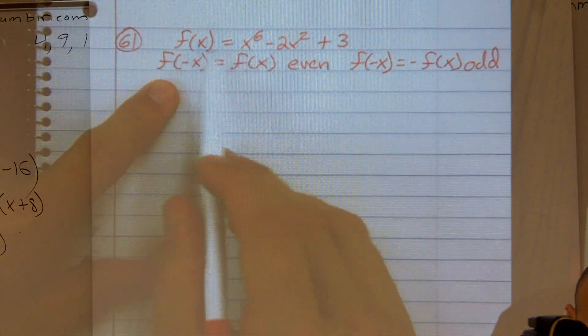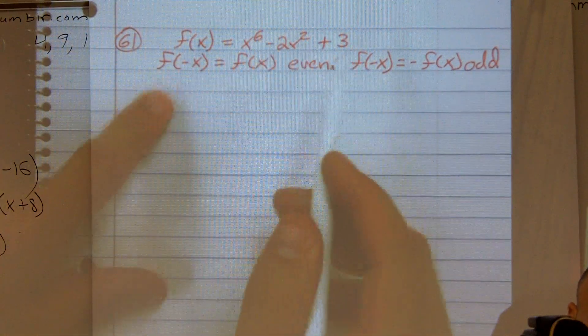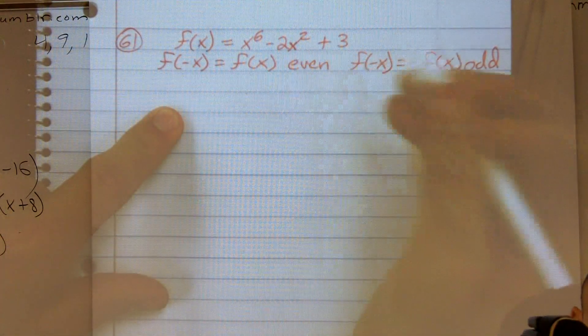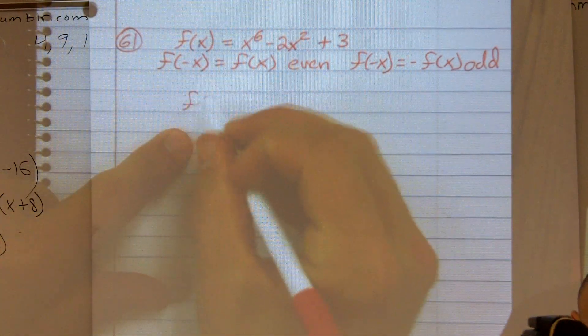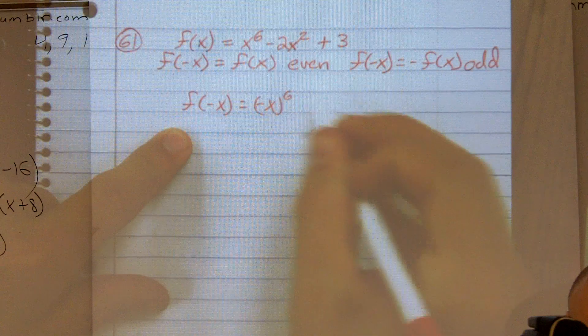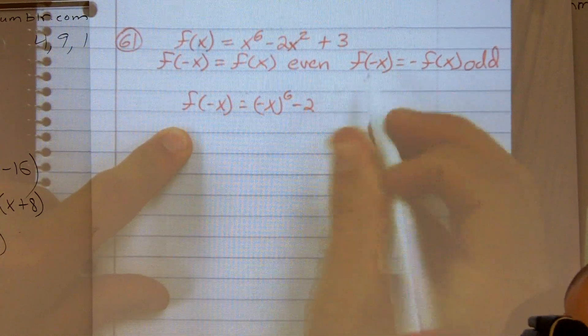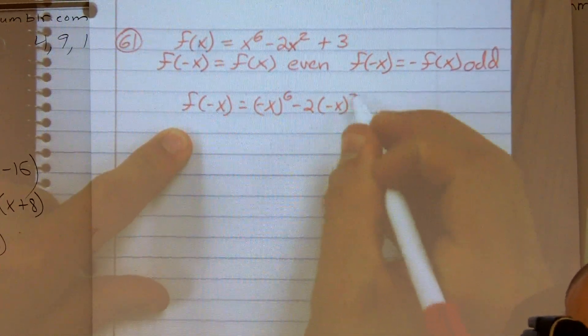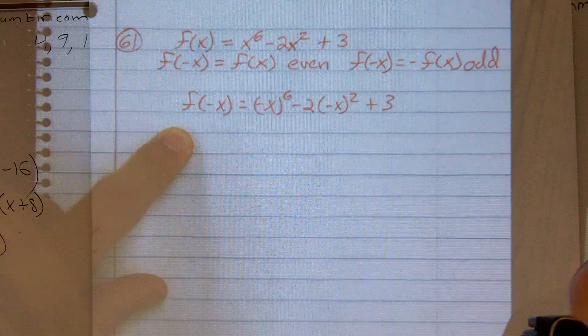So if I do f of x equals x to the 6 minus 2x squared plus 3. So I'm going to plug in f of negative x equals negative x to the 6 minus 2 times negative x squared plus 3. Follow?